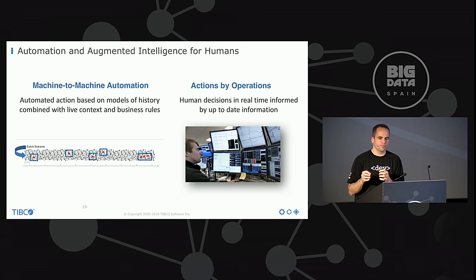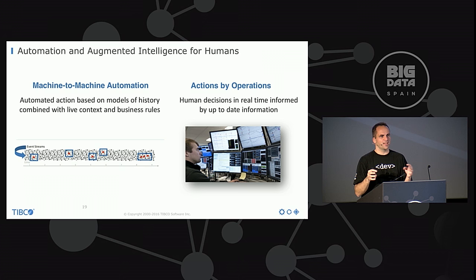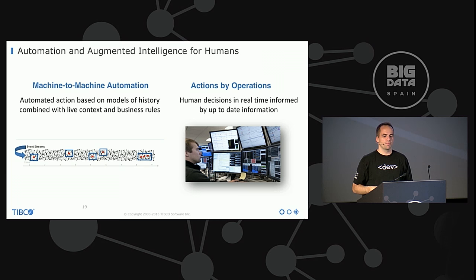Take predictive maintenance in airlines or on oil platforms: when an alert pops up and a model says a machine will probably break in the next 48 hours — thanks to machine learning with 80 or 90% probability — you'd want to replace it before it breaks. But these parts can be 100,000 euros or more, so a human still has to make the final decision. He looks at the data in more detail and decides whether to replace the part.